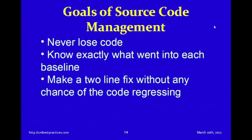Here are some goals I always have in source code management. The first is to guarantee that you never lose code. For those involved with the Y2K effort, many large corporations panicked because they didn't have the source code locked down — production systems running for years with no one knowing the exact version. You need to know exactly what went into creating each baseline in production, and you need to be able to make a two-line fix to the code without any chance of regression.